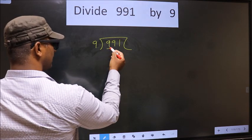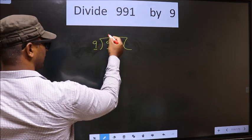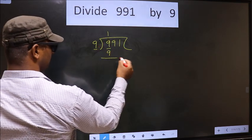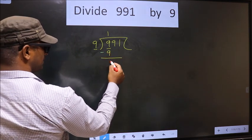Now here we have 9. Here also 9. When do we get 9 in 9 table? 9 once 9. Now you subtract. 9 minus 9, 0.